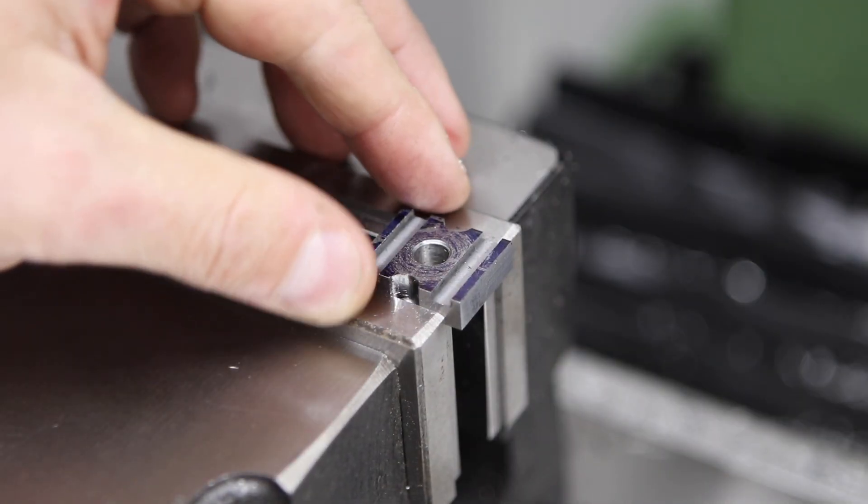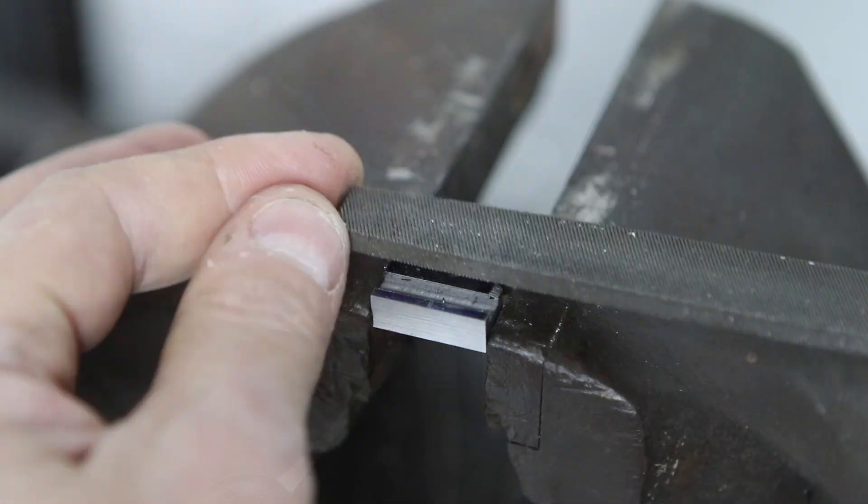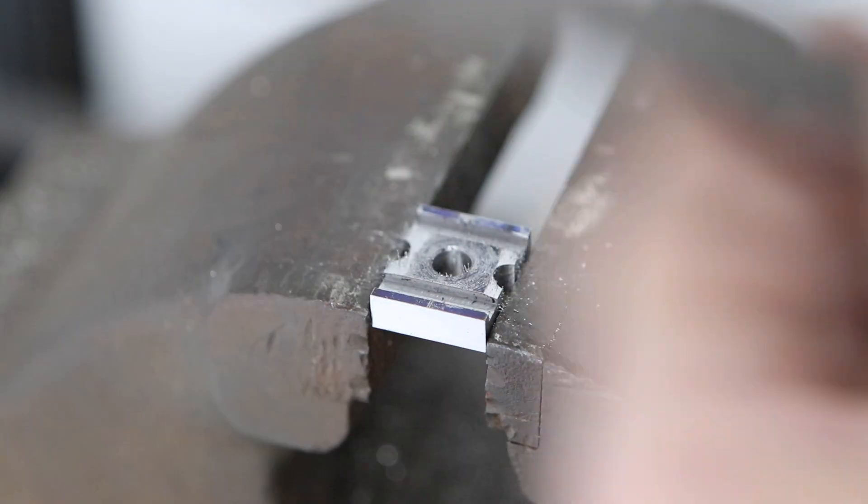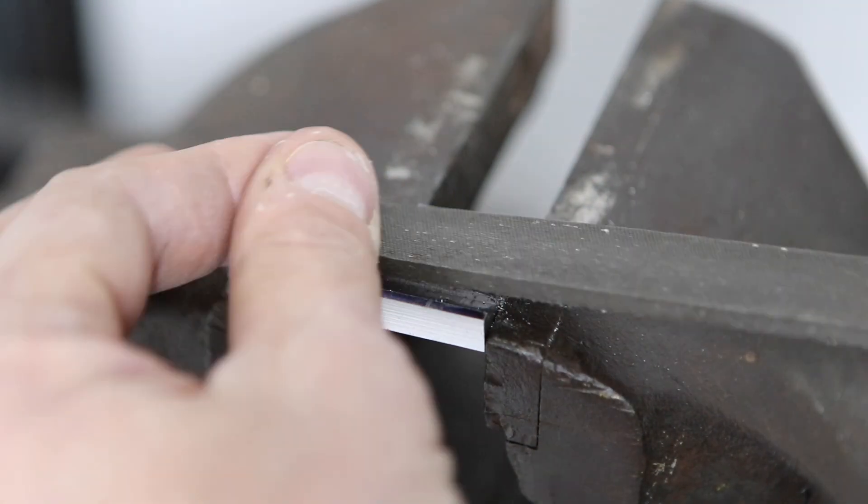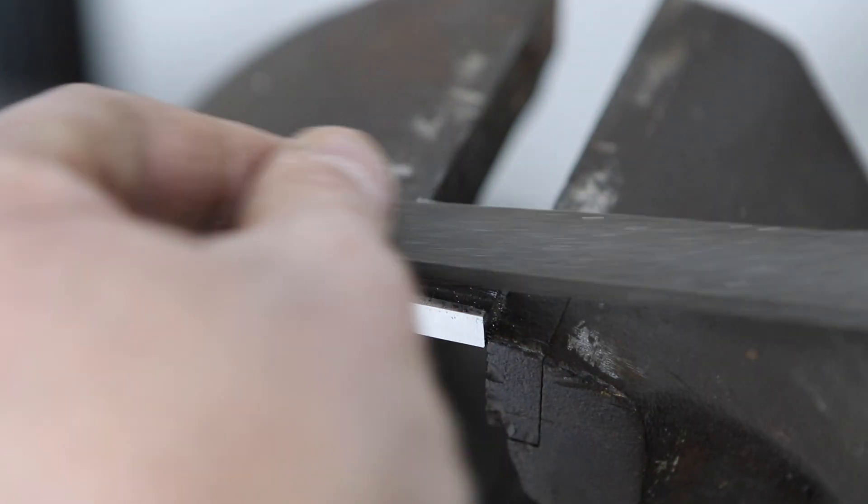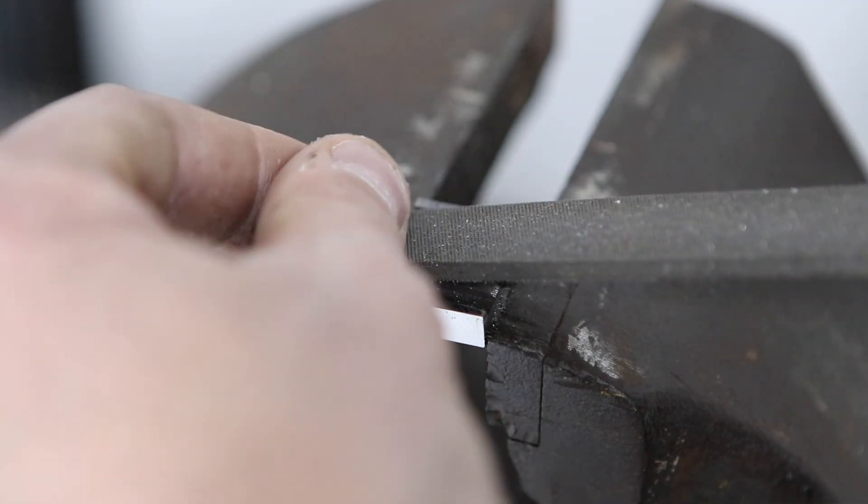So that came out pretty well and the next operation is to file that central section to a convex profile. I'm finishing up with this rocking motion on the file here and I've found that this is the best way to get a consistent radius across a part like this.